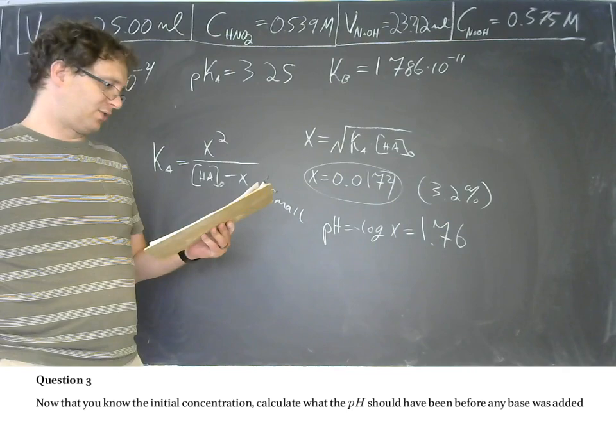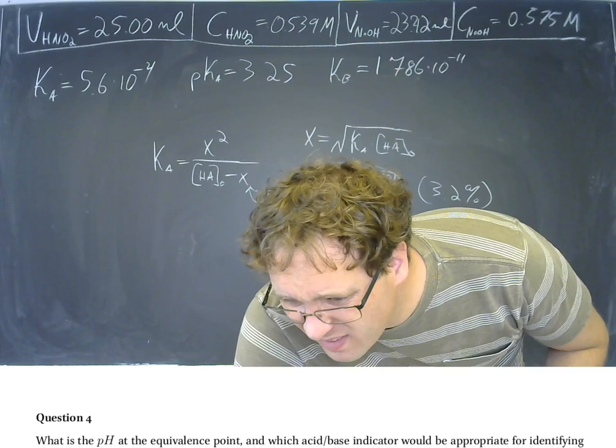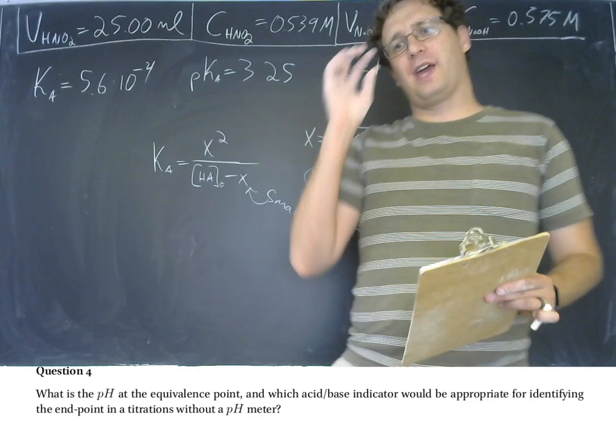The pH equals the negative log of x, which gives us 1.76. That is our initial pH.